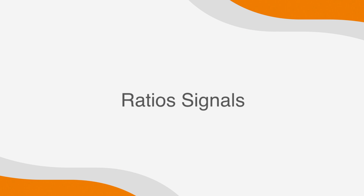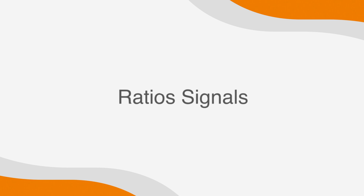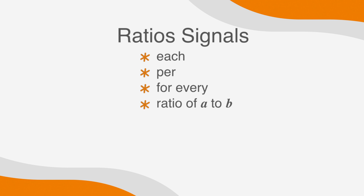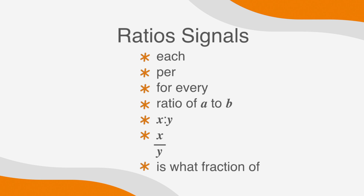Finally, we need to know when to use a ratio. Words like 'each,' 'per,' 'for every,' 'the ratio of a to b,' 'x to y,' 'x over y,' and 'is what fraction of' are all good indicators.